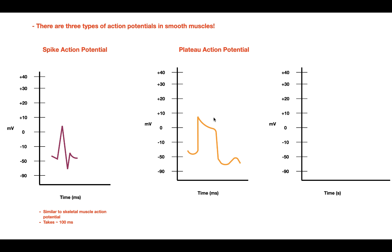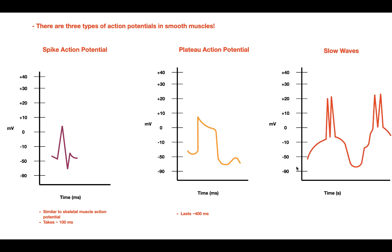The plateau action potential looks like this and takes around 400 milliseconds to complete. The last type is the slow wave action potential, which looks something like this. It occurs on the timescale of seconds — the longest of the three — and may also be spontaneous. In this video, we're primarily going to focus on the slow wave action potential.